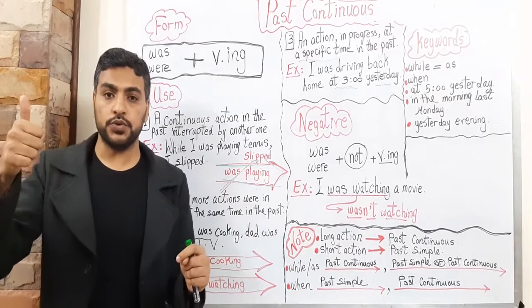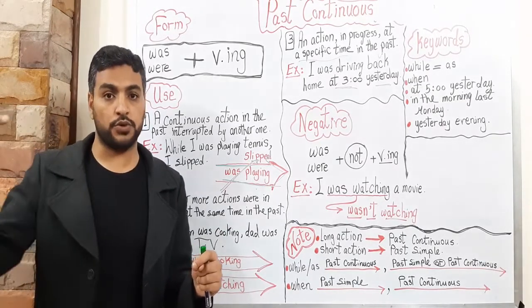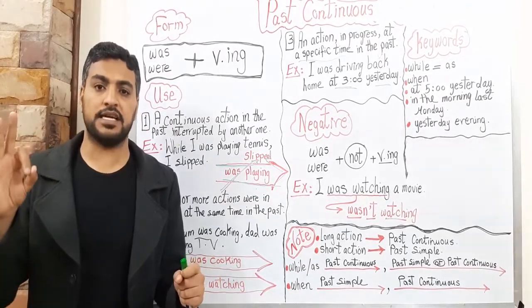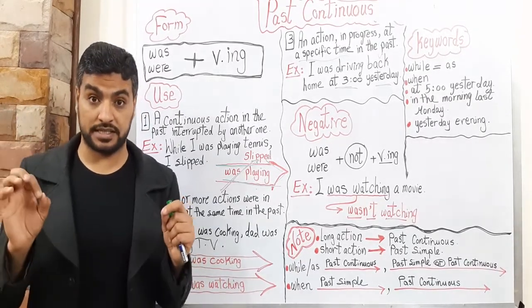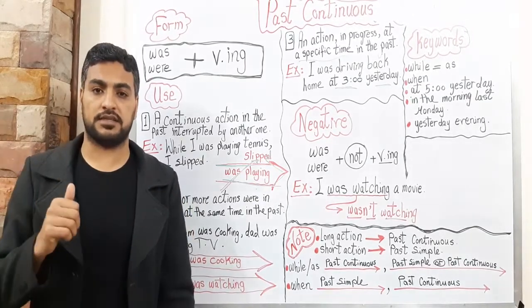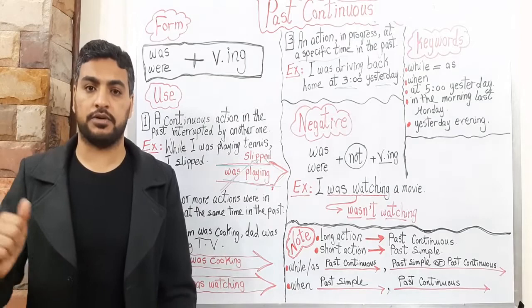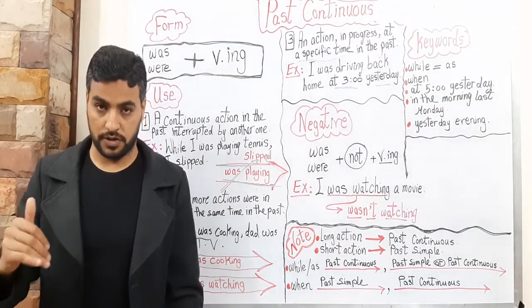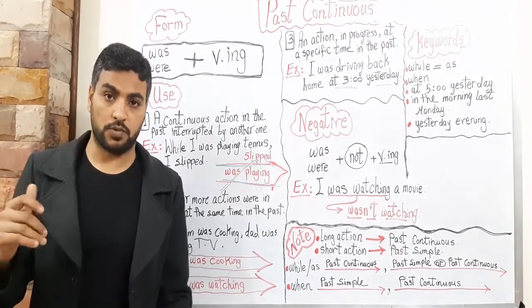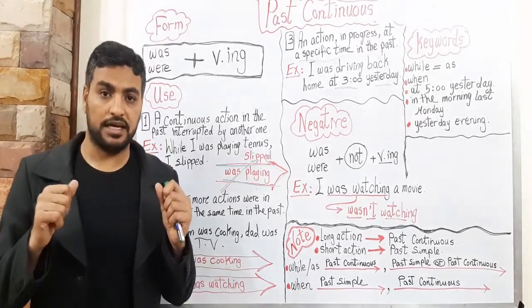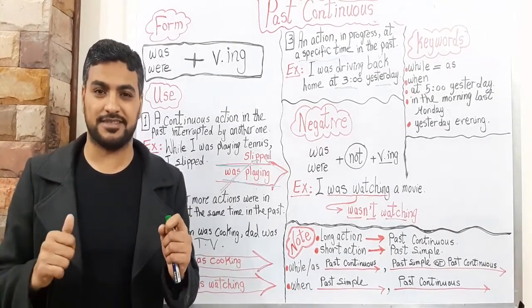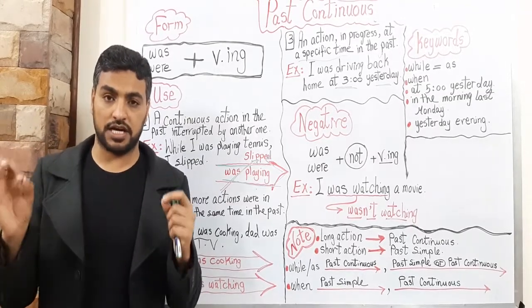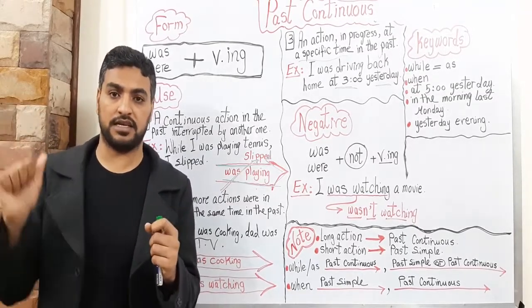Number two: two or more actions were happening at the same time — were in progress, were continuous in the past — and none of them interrupted the other. For example: while my mother was cooking, my father was watching TV, my sister was listening to music, and I was studying my lessons. Actions were happening at the same time, but in the past.